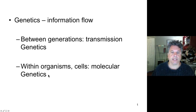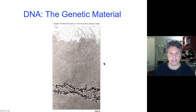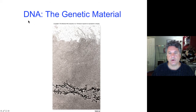Molecular genetics was really born with the solving of the structure of DNA by Watson and Crick. This is a DNA that has been spilled out of a chromosomal scaffold, showing that each chromosome — each chromatid — consists of one very, very long stretch of DNA: one long DNA molecule, very thin but very, very long. Let's talk about this in a historical context and discuss the discovery that DNA was in fact the genetic material.